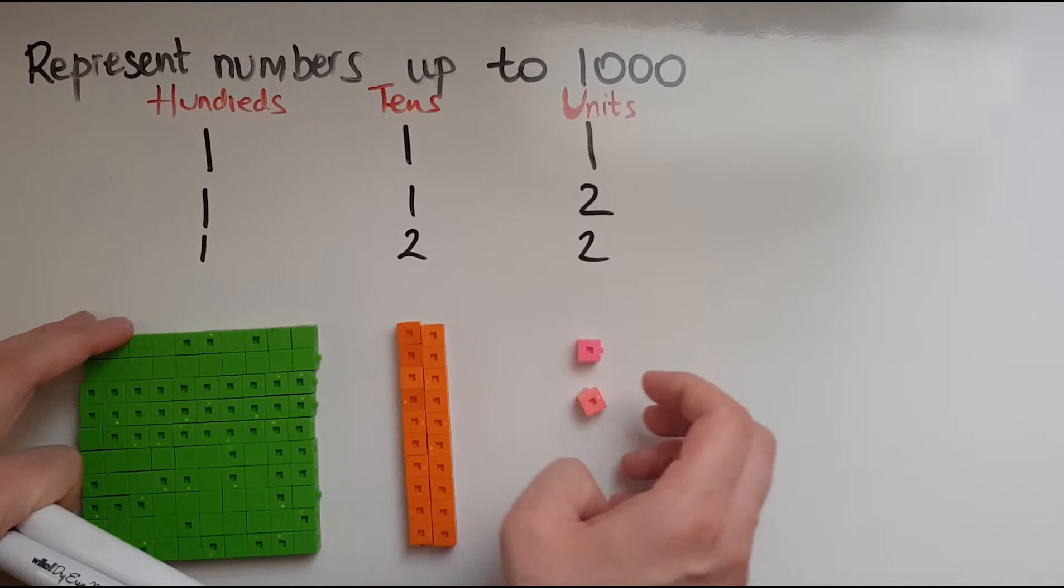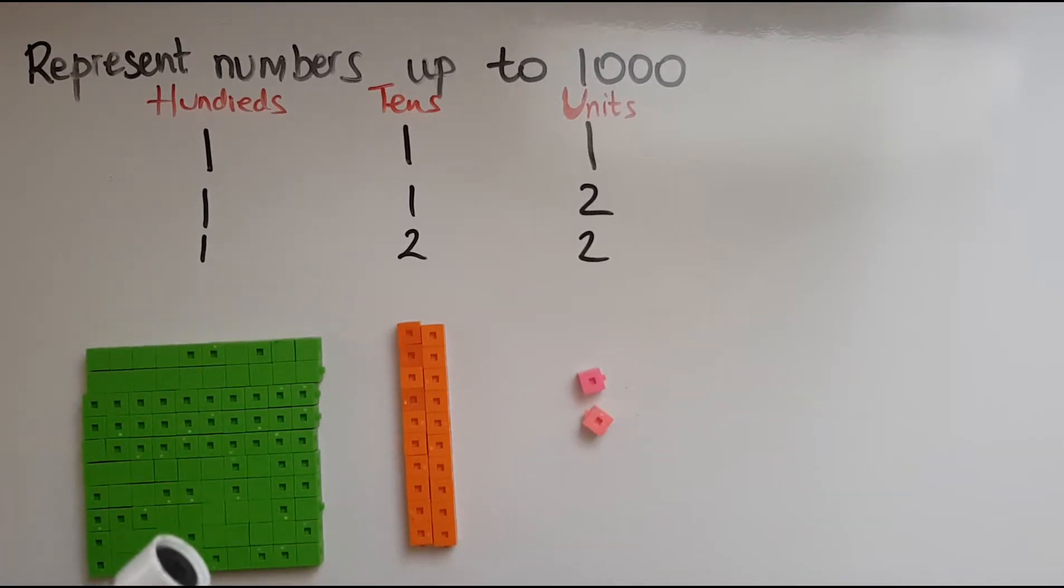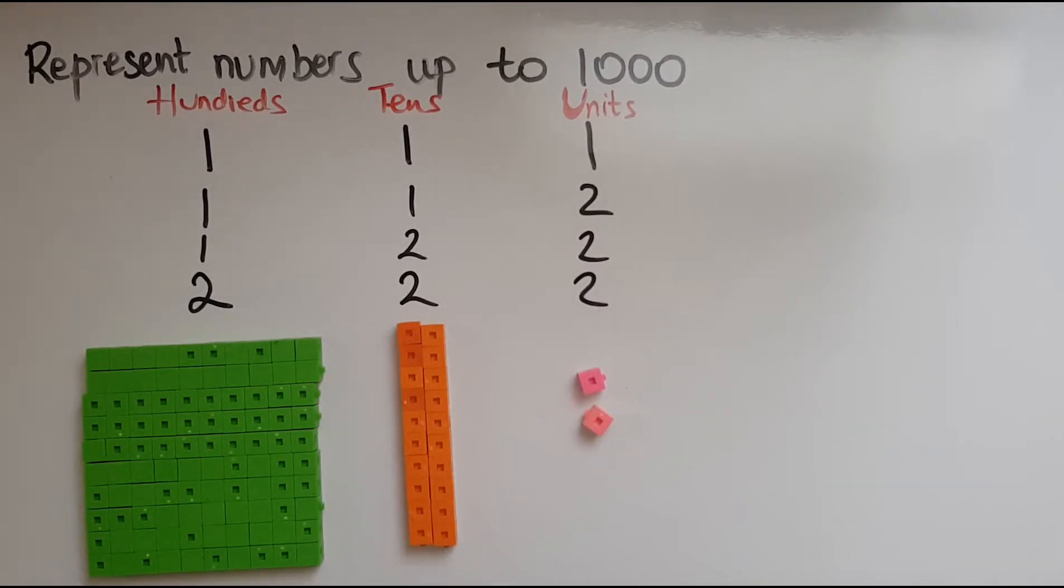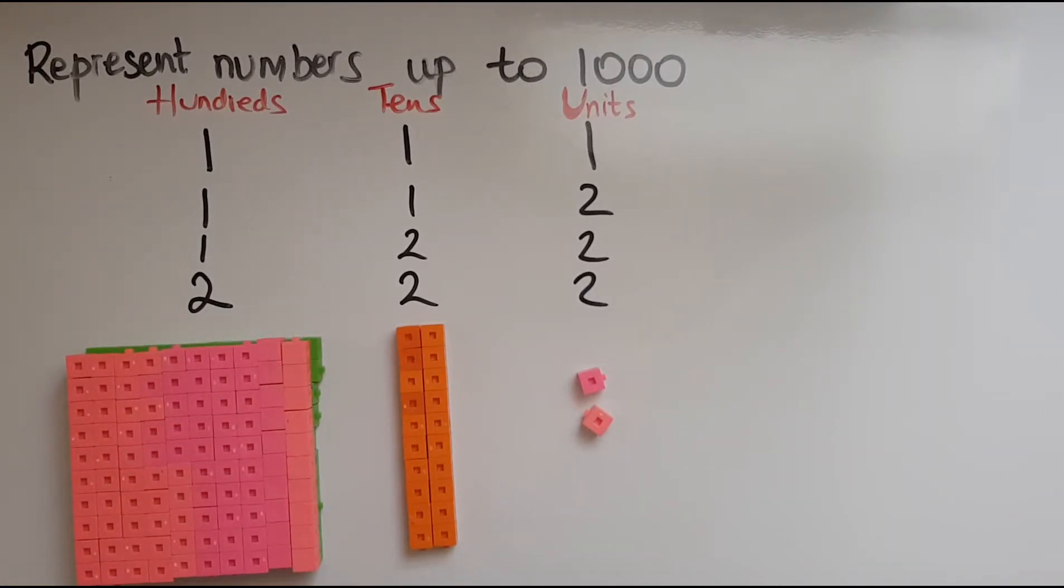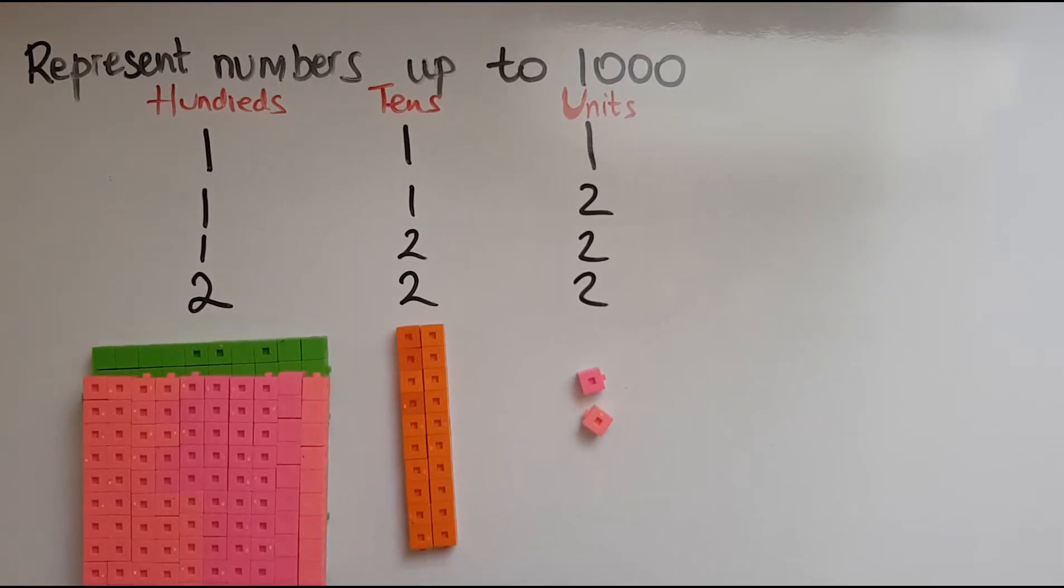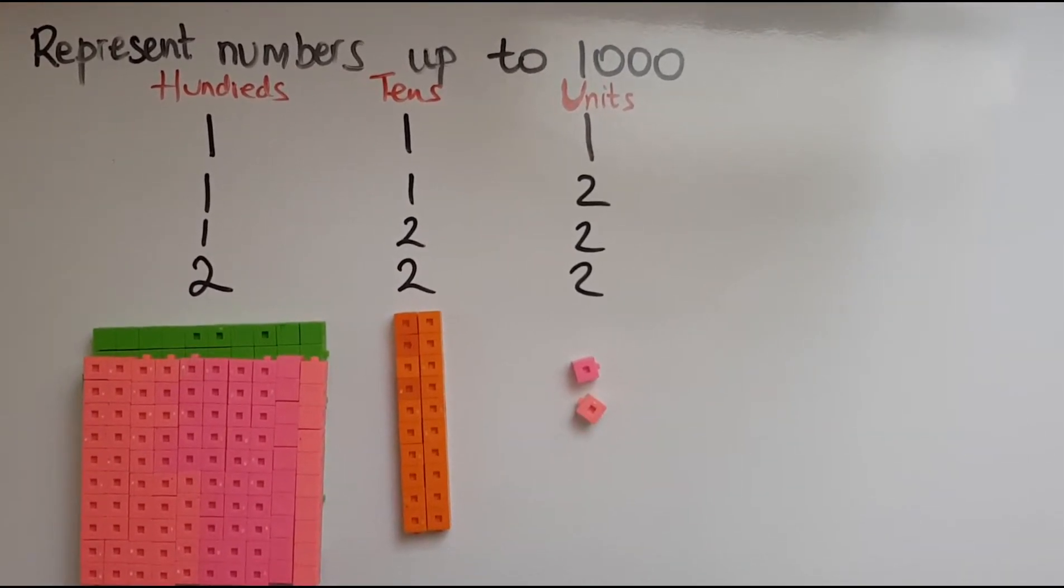Let's try and represent 222. So what has changed now? The units are the same, the tens are still the same so we've got 2 but the hundreds have changed. So I've got a block of 100 but I need another block of 100. So here we have 2 of them, 2 blocks of 100.